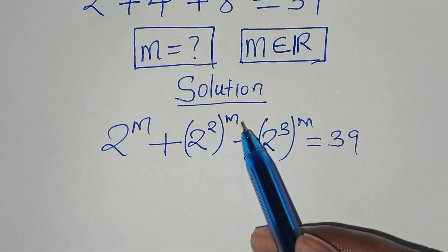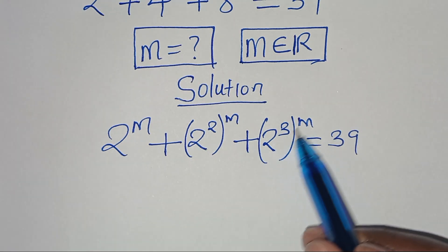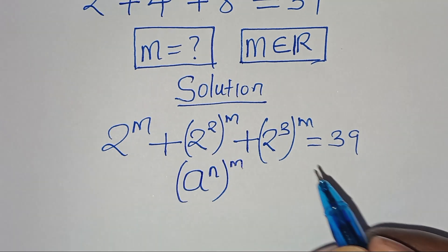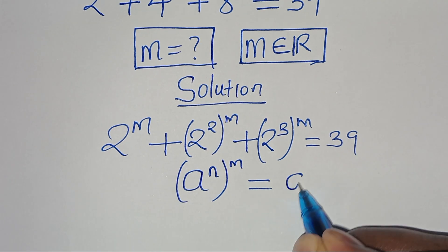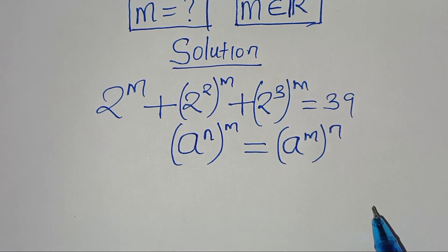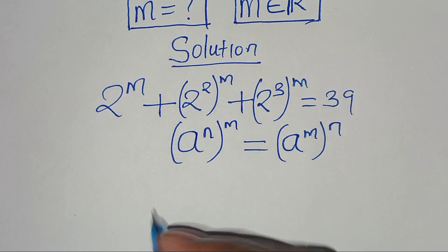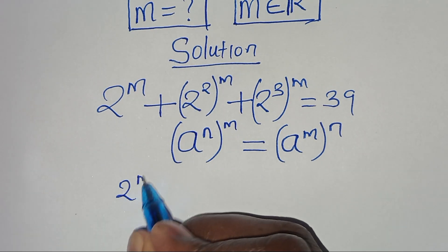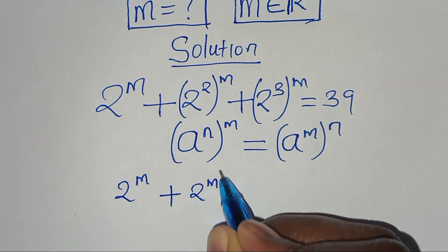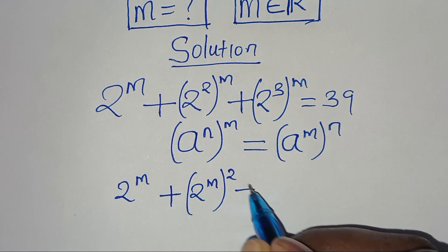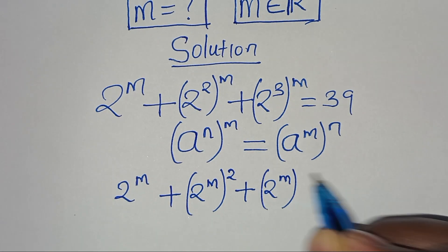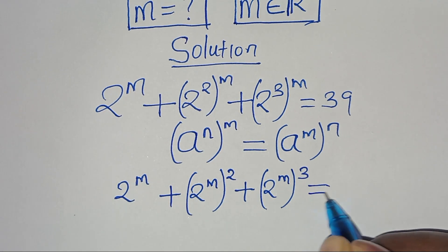Now, 2 to the power of 2 to the power of m, and 2 to the power of 3 to the power of m — these are in the form of a to the power of n, raised to the power of m, which we can express as a to the power of m, raised to the power of n. Applying this exponent property, we have 2 to the power of m, plus 2 to the power of m raised to the power of 2, plus 2 to the power of m raised to the power of 3. This is equal to 39.